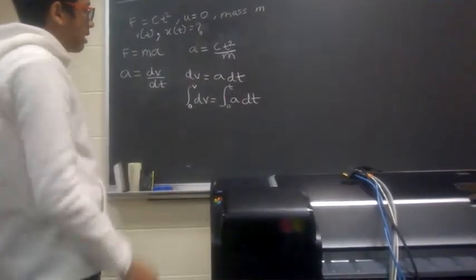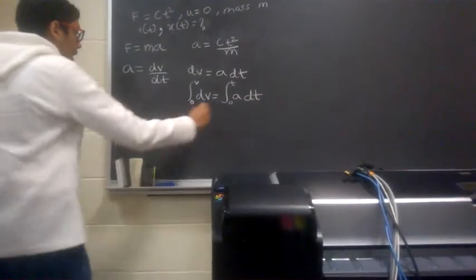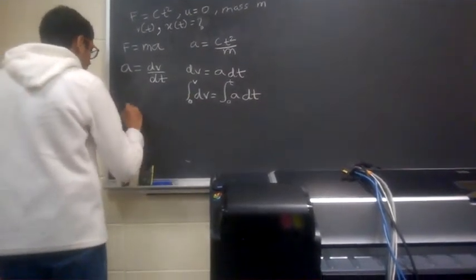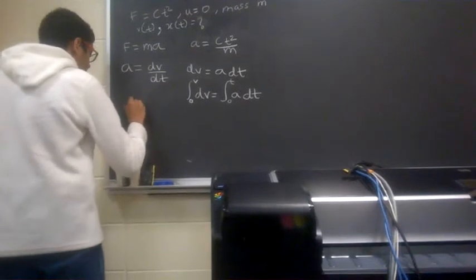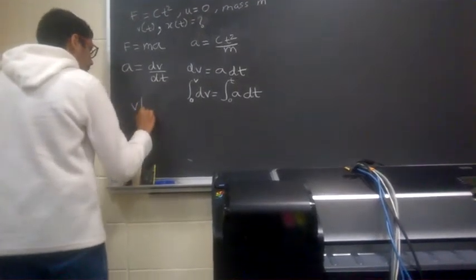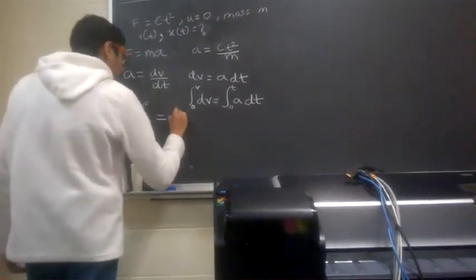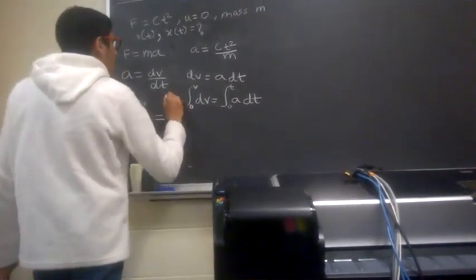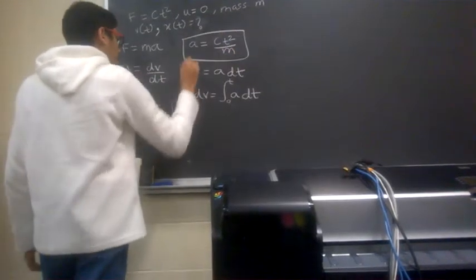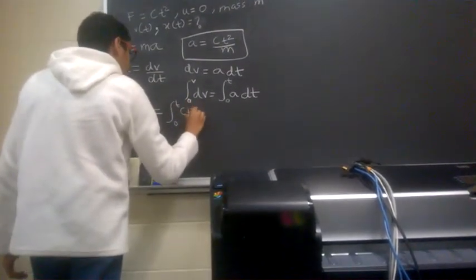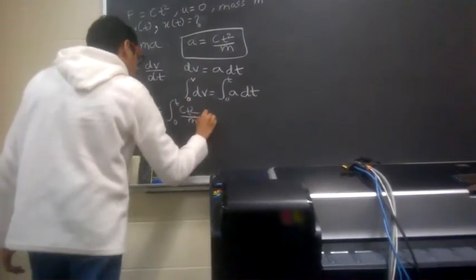So now, it's just basically converted into a math problem, and we just integrate dv. So integral dv will be v evaluated at 0, and v is equal to, we know a as a function of t from here, so we just plug that in with ct squared over m dt.